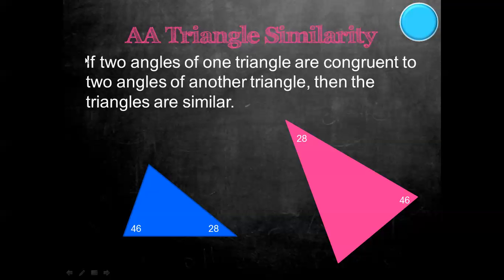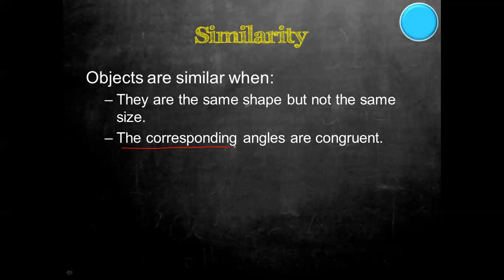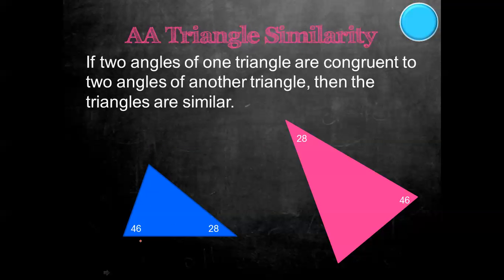One of those postulates is the angle-angle triangle similarity postulate. What that tells us is that if we have two angles of one triangle that are congruent to two angles of another triangle, then those triangles are similar. That makes sense because if we're given two angles, we automatically find the third since a triangle's angles add up to 180. So if two angles are the same, the third is automatically the same as well.